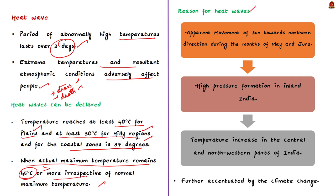Now coming to the reasons for heat waves in India. The apparent movement of sun towards northern direction during the months of May and June, resulting in high pressure formation in inland India, which results in abrupt temperature increase in the central and northwestern parts of India. And the heat waves is further accelerated by the climatic change phenomenon.